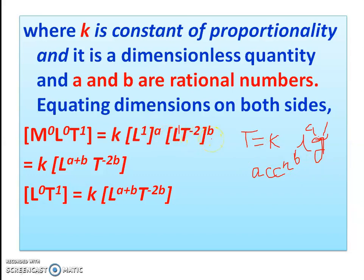Now we write the dimensional equation. The left-hand side, which is T, has dimension M⁰ L⁰ T¹. On the right-hand side we substitute the dimensions of L and g into the expression k L^a g^b.